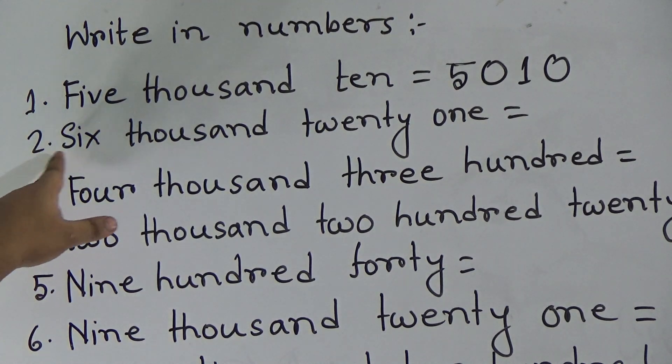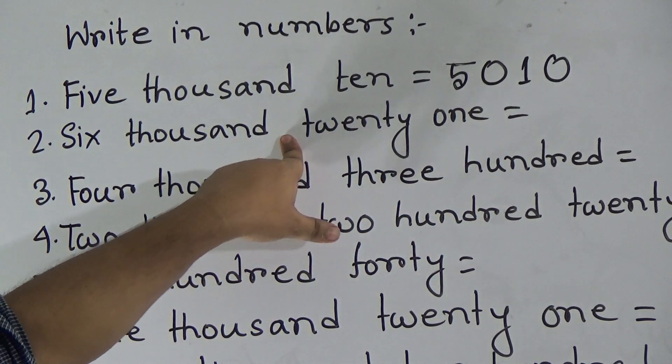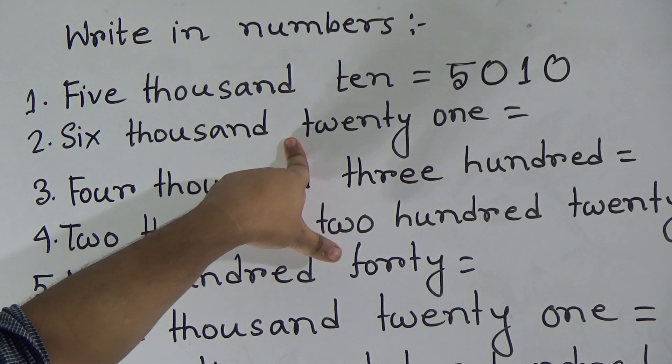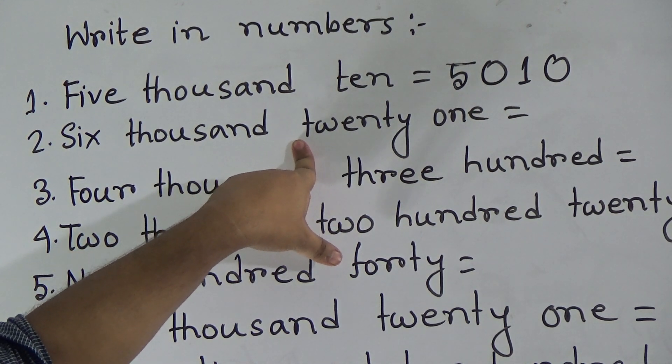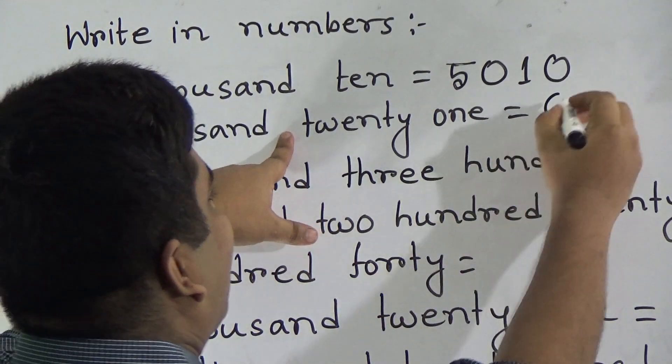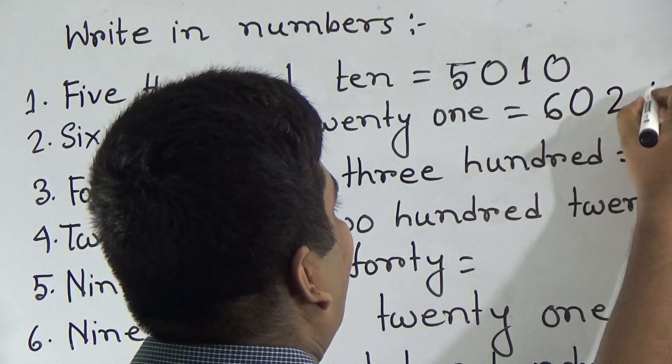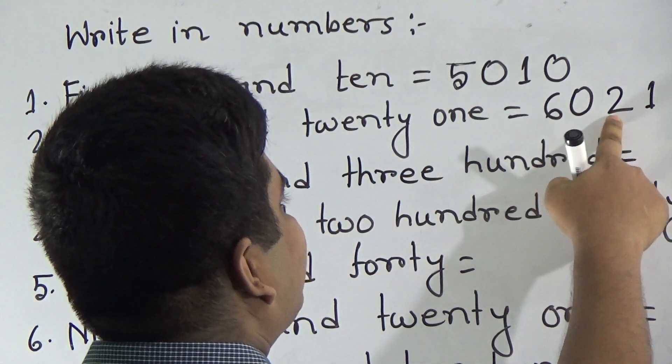Our next number is 6021. Here, also 100 place is absent. For this reason, 100's place will be 0. That means, 6000, write 6 first. Then, 100 place is 0 and 21. Write 21 and read as 6021.